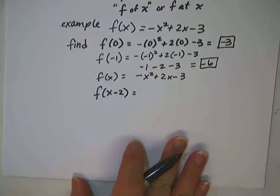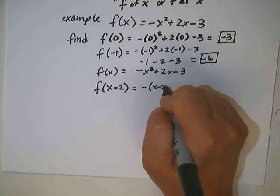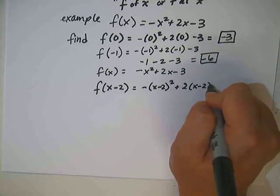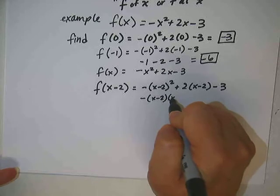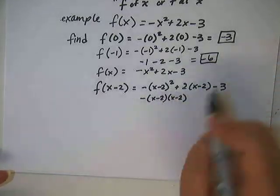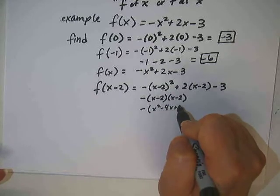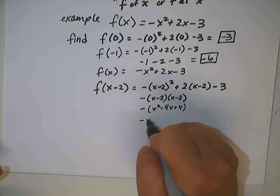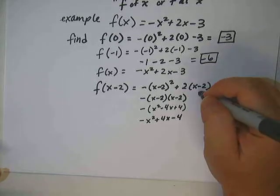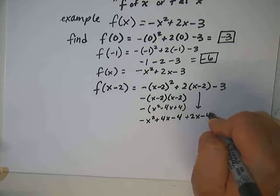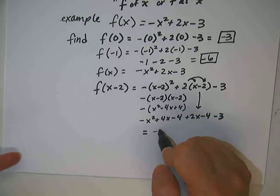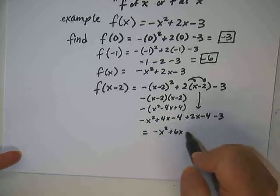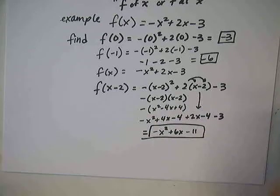What if I ask you to find f(x-2)? That means I'm going to plug in (x-2) everywhere there's an x, and then simplify. You're going to have to FOIL this thing and distribute. So foiling: x squared minus 4x plus 4. Then distributing the negative: negative x squared plus 4x minus 4. Then distribute the 2x part: plus 2x minus 4. And then minus 3 at the end. Combining like terms gives negative x squared plus 6x minus 11.